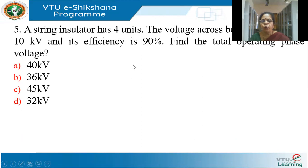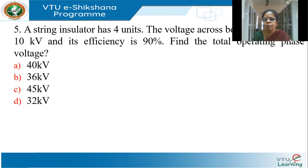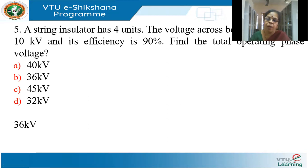A string insulator has four units. The voltage across the bottom-most unit is 10 KV and its string efficiency is 90%. Find the total voltage. String efficiency equals total voltage divided by N times the voltage across the bottom-most disk. So: 0.9 = V / (4 × 10), giving a total voltage of 36 KV. Multiplying 36 KV by root 3 gives the line-to-line voltage, but since that option is not given, the answer is 36 KV.